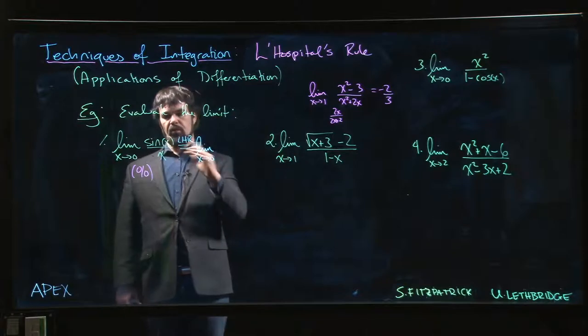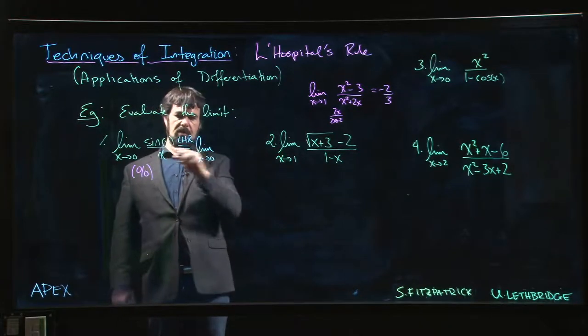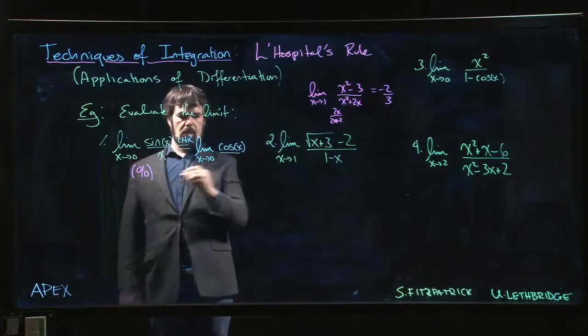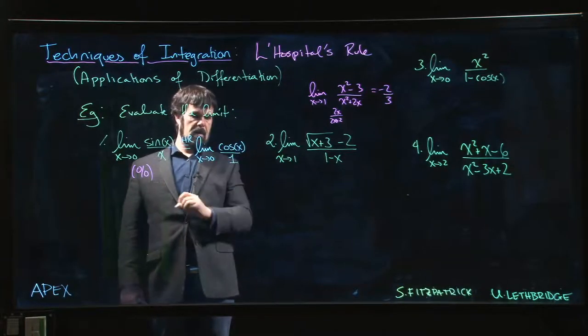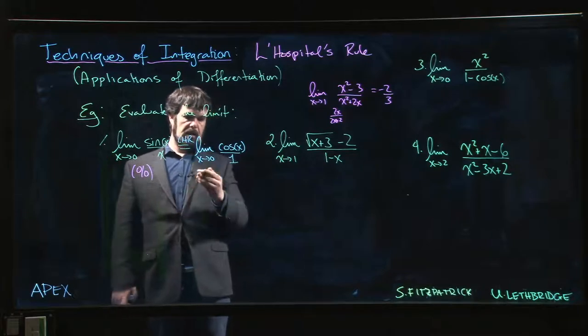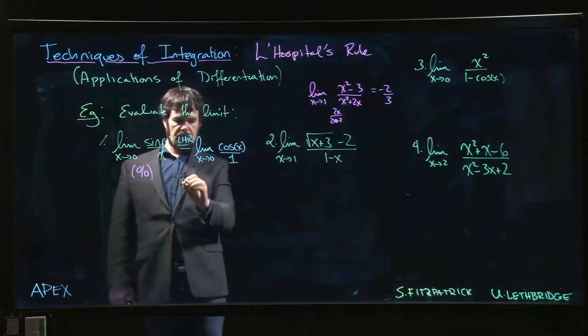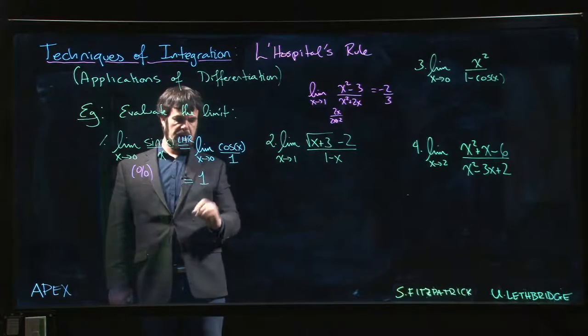Okay, so L'Hopital's rule says take the derivative of the top, divide by the derivative of the bottom. So the derivative of sine is cosine, the derivative of the bottom is 1. So we let x go to 0, we get cosine of 0 over 1. Cosine of 0 is 1, and we get 1.